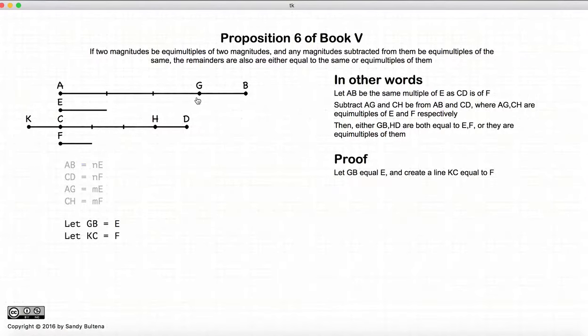We're going to start our proof by assuming that GB is equal to E. Now it could be a multiple of E, but we're starting off with it equal to E. Let's draw a line, KC, that is equal to F.